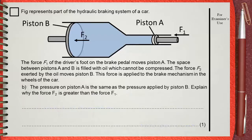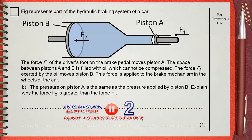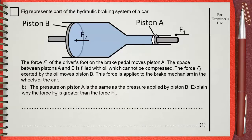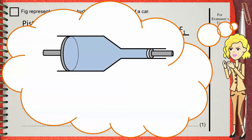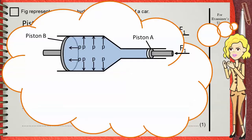Question B: The pressure on piston A is the same as the pressure applied by piston B. Explain why force F2 is greater than force F1. Here we need to understand the system — this is piston A and this is piston B. The space between them is completely filled with oil. Oil is a liquid, and liquids are normally incompressible. If we apply force F1 on piston A, this force pushes on the oil, causing equal pressure at each point in the cylinder.